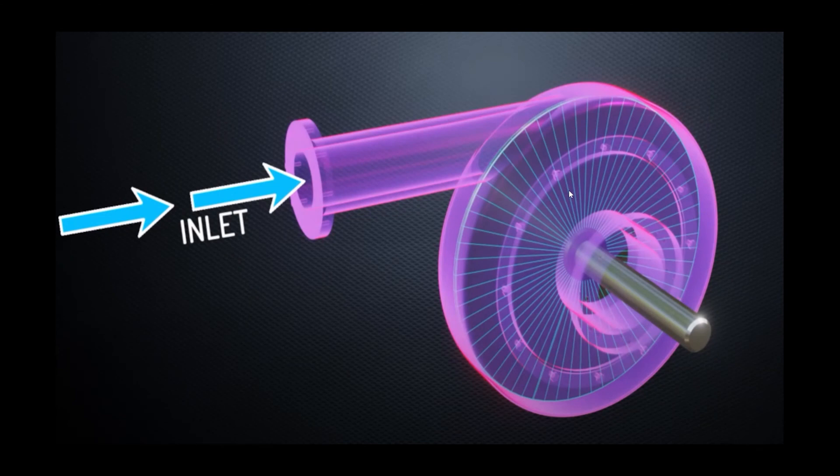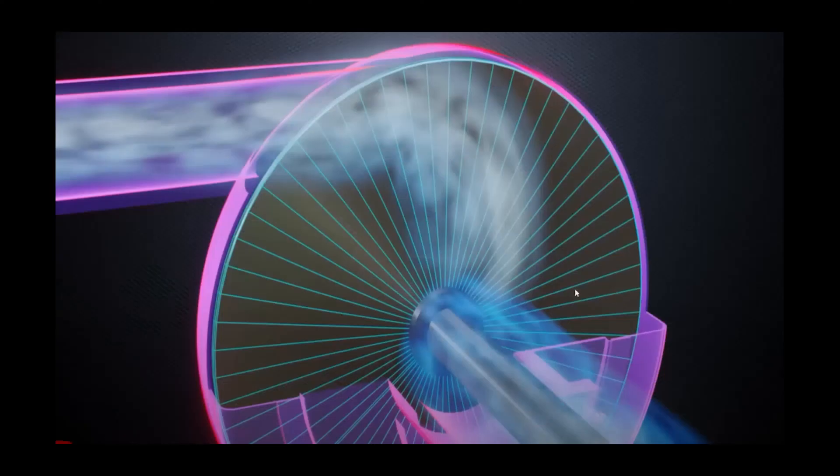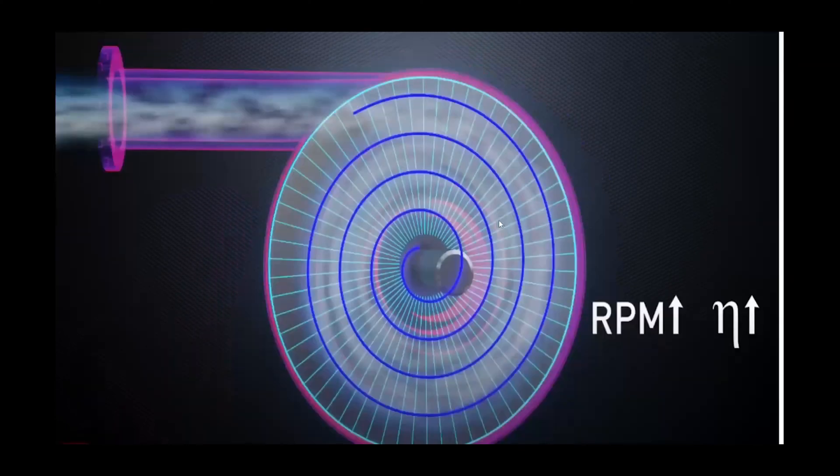As it spins, the air will go on the pathway which goes like this and then slowly to the middle. The more air there is - if there's 30 people in a five-person room - there will be more pressure trying to find the exit. So it would spin around and around and slowly come to the middle. In other words, the pressure or how many people there are equals the RPM of this turbine.